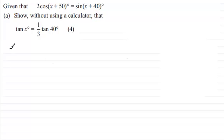So I'm just going to write down what we're given first of all. We've got 2 times the cosine then of x plus 50 degrees. And that's equal to the sine then of x plus 40 degrees.